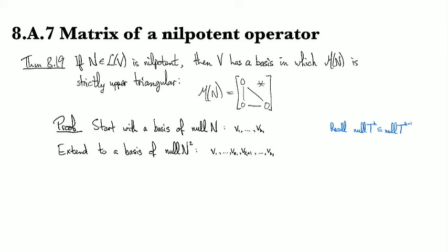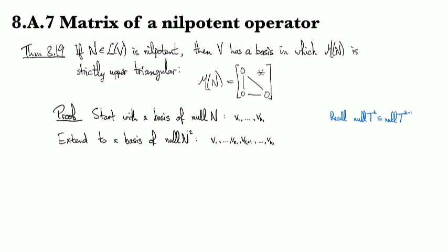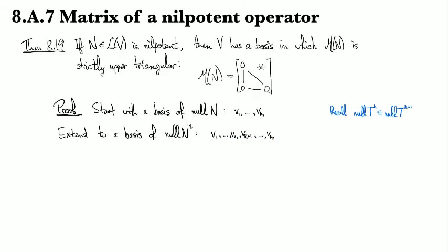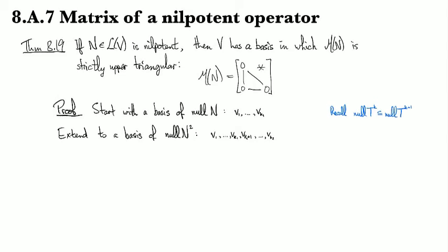And then we keep on doing this. So all of these vectors here are killed off by N squared. These ones are killed off by N squared, but they're actually already killed off by N. And we keep on building up a basis that has this property. So the last batch are killed by raising N to the Jth power. And the ones before that got killed off at some earlier step.